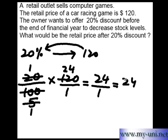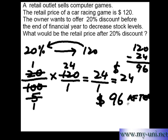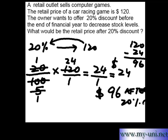20% of $120 is $24. Now you have to subtract $24 from $120. So 120 minus 24: borrow 1, 10 minus 4 is 6, 11 minus 2 is 9. So the retail price is $96 after the 20% discount. Thank you very much.